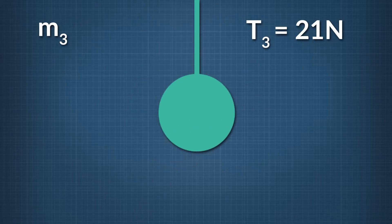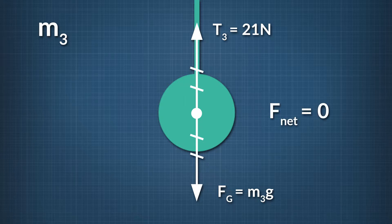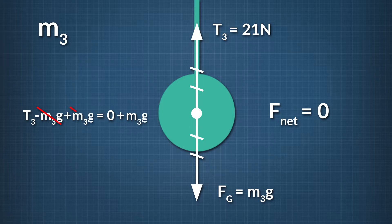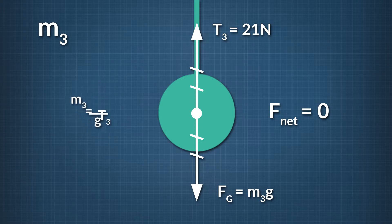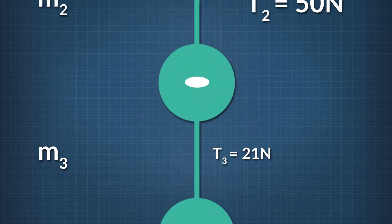Let's focus on m3 and draw a free-body diagram of the forces acting on this mass. The forces acting on m3 are tension pulling up and gravity pulling down. Since m3 is at rest, the net force acting on it is zero. We've made our positive direction up, which means T3 minus m3 times g equals zero. Solving, m3 equals T3 divided by g. Plugging in 21 newtons for T3 and 9.8 meters per second squared for g, we find that m3 equals 2.1 kilograms.